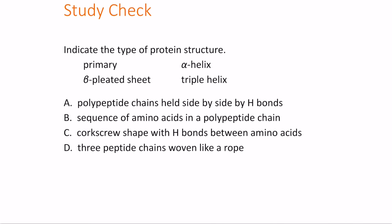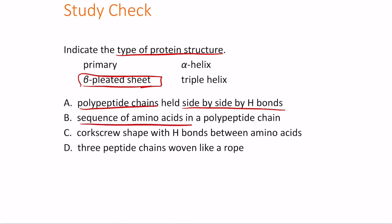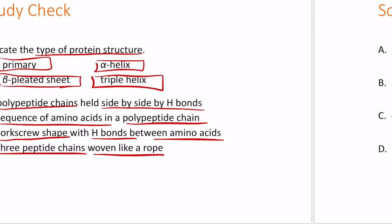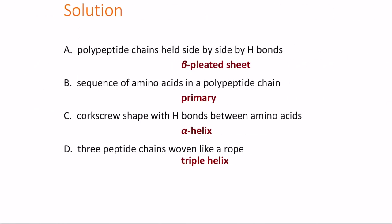To identify protein structure types: a polypeptide chain held side-by-side by hydrogen bonds is a beta-pleated sheet; a sequence of amino acids in a polypeptide chain is the primary structure; a corkscrew shape with hydrogen bonds between amino acids is an alpha helix; and three peptide chains woven together like a rope form a triple helix.